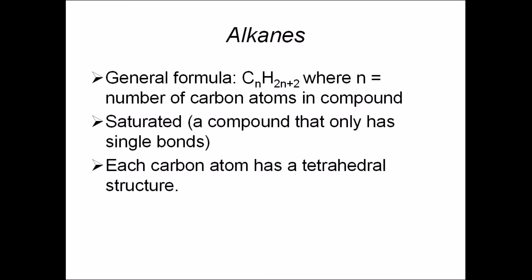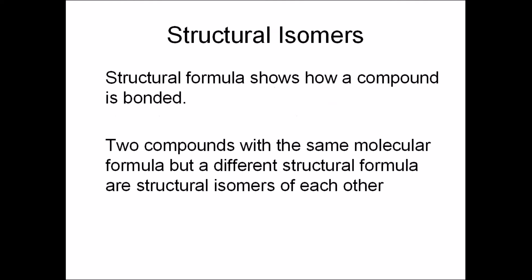Alkanes are said to be saturated. In chemistry this means that they only have single bonds. Each carbon atom in alkanes also has a tetrahedral structure. If you see a molecular formula for a compound, it tells you the number of atoms in each molecule, but a structural formula provides more detail — it actually shows how the compound is bonded together.